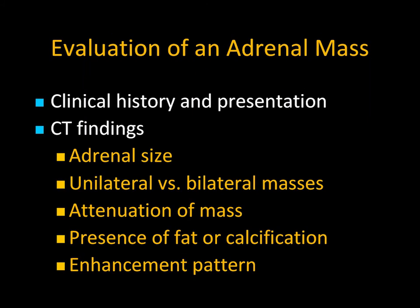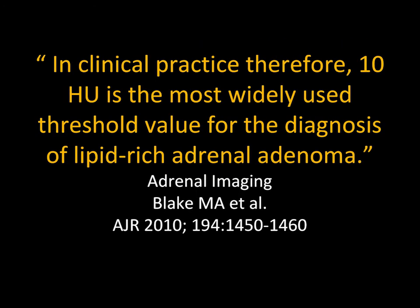When you pick up an adrenal lesion, history is important. If a patient is cushingoid, you're thinking of carcinoma or adenoma. If the patient is hypertensive, you're thinking about a pheochromocytoma. Then we look at size, unilateral versus bilateral, attenuation, fat content, enhancement, and washout — all things we typically think about.